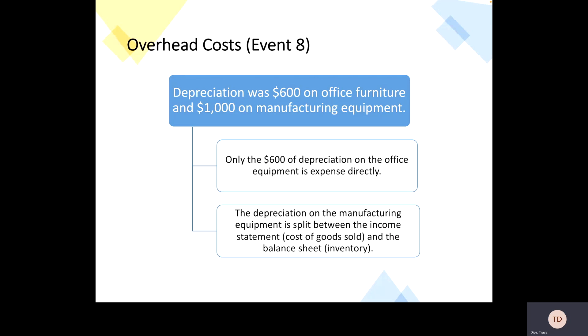And again, here's just another overview of that event eight, where we were looking at the overhead costs of the depreciation overhead costs. That $600 for the office equipment was expensed directly. It just went straight to the income statement, whereas that manufacturing equipment depreciation was split in between the balance sheet in your inventory and the cost of goods sold. So when we looked at it, I believe I said there was $6,000 worth of total inventory and we sold $4,000 of it. So of the $1,000 that came in, maybe two thirds of it was sold.